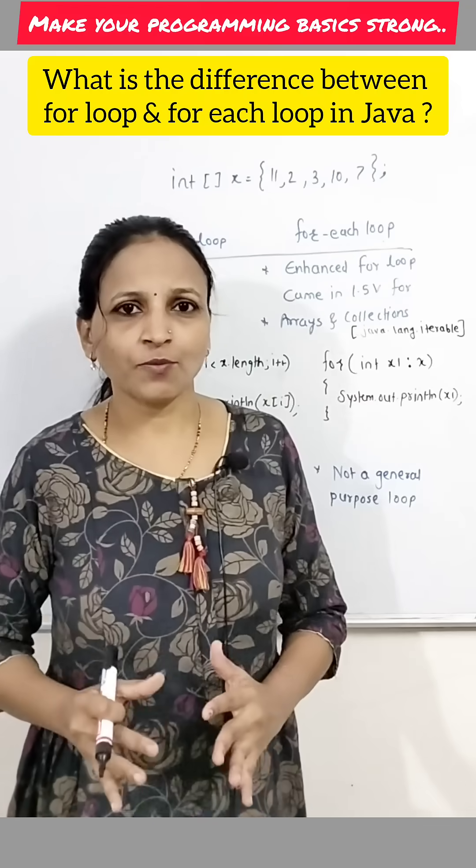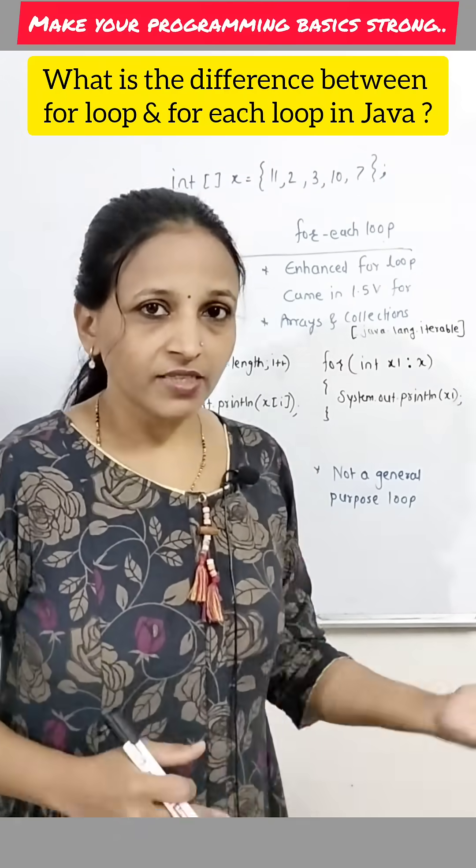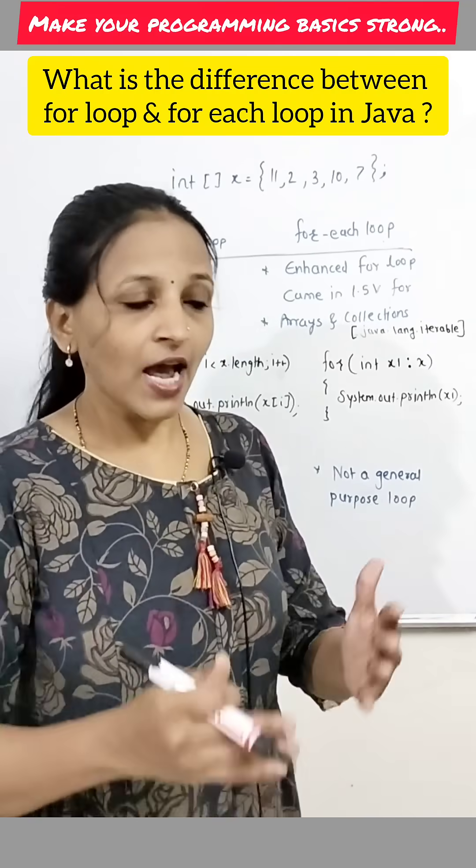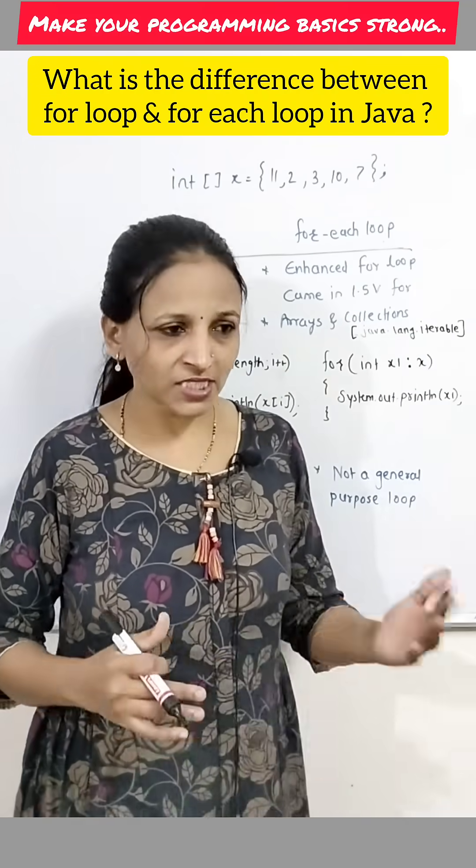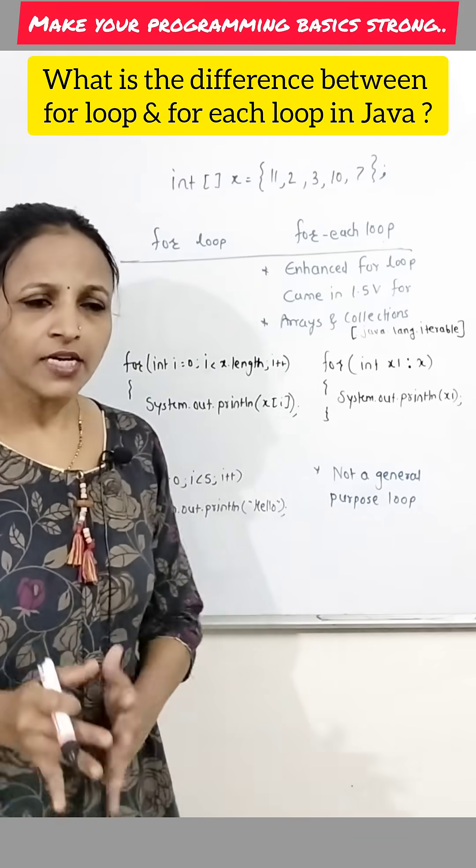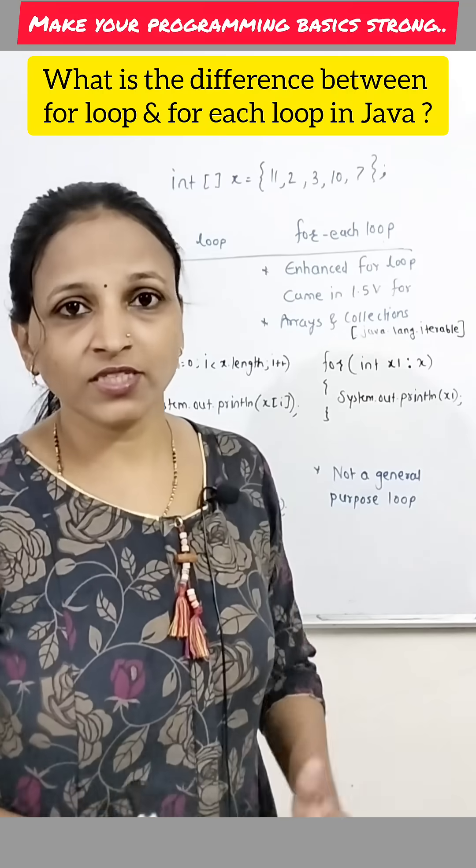That is a traditional approach of looping. We already seen like there is a counter variable that we have to initialize first. Then there is a test condition, increment, decrement. And according to the condition, I mean, still the condition is true, the execution will be done. That is the normal approach. That is a traditional approach that till now we have seen.